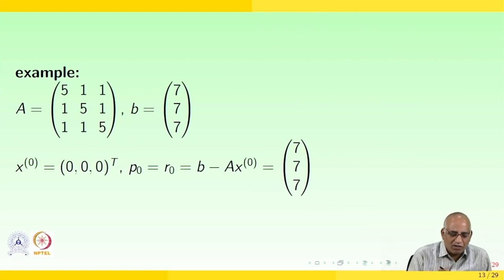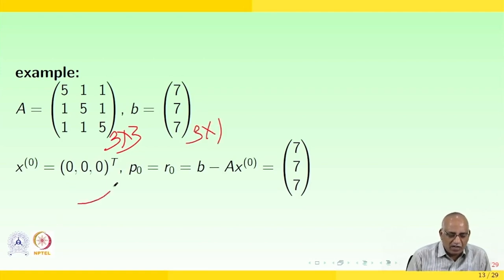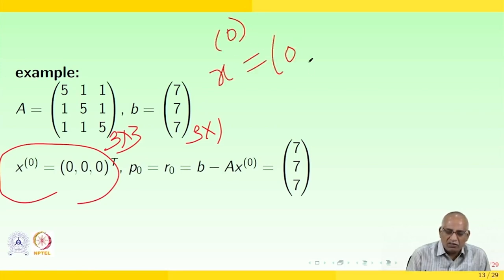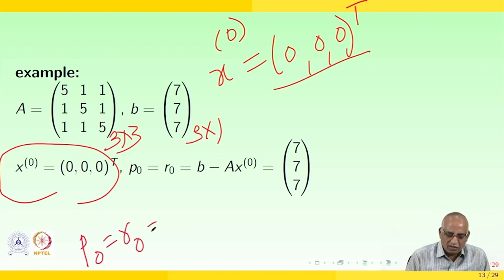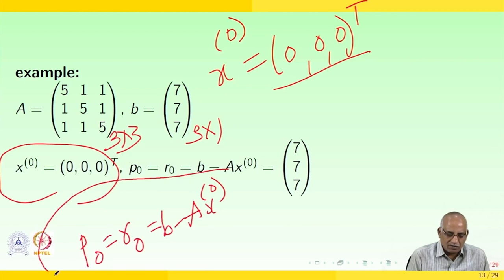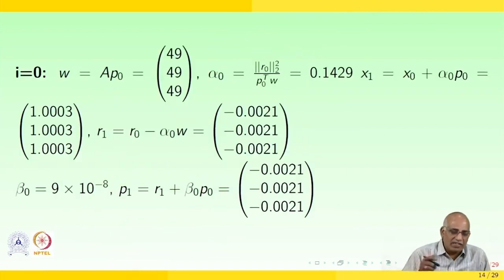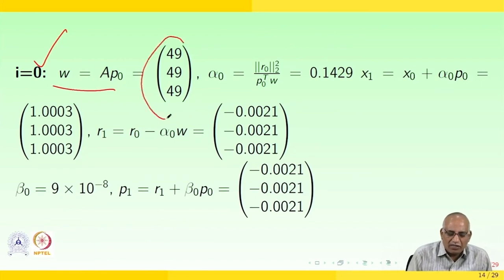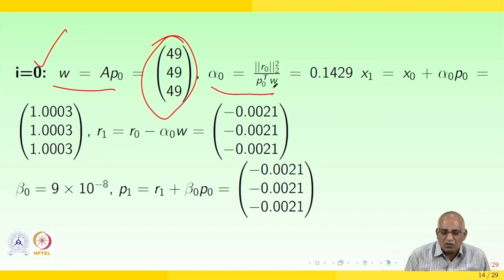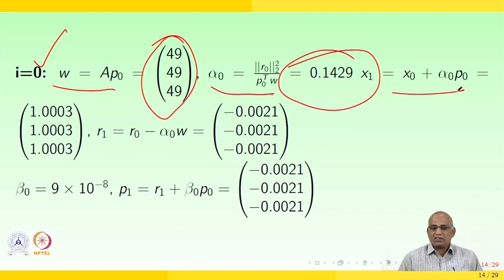Consider a 3×3 example. We start with x₀ = [0, 0, 0]ᵀ, so p₀ = r₀ = b − Ax₀ = [7, 7, 7]ᵀ. For i = 0, compute w = A p₀. Then α₀ = ‖r₀‖² / (p₀ᵀ w), giving x₁ = x₀ + α₀ p₀.